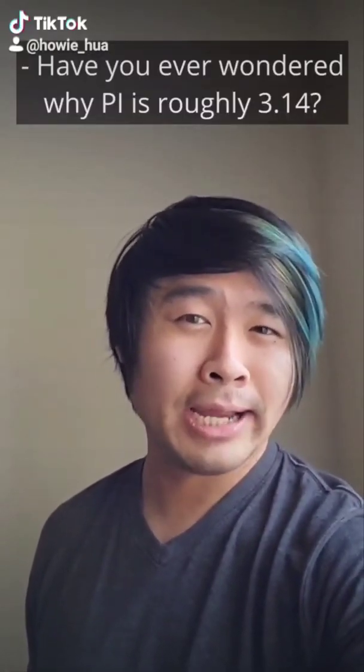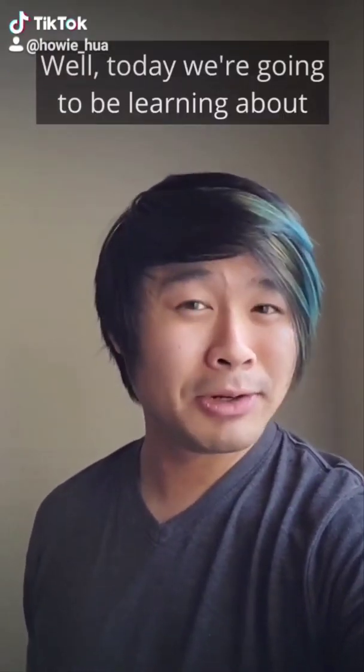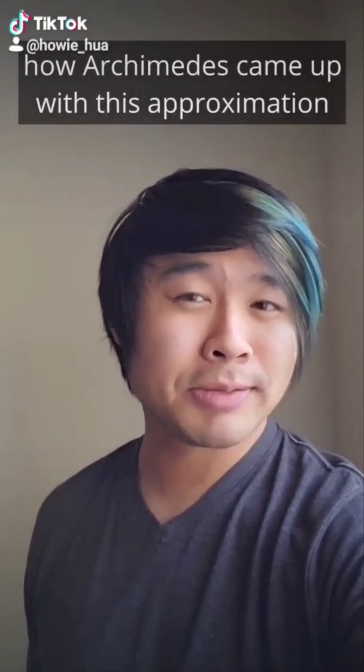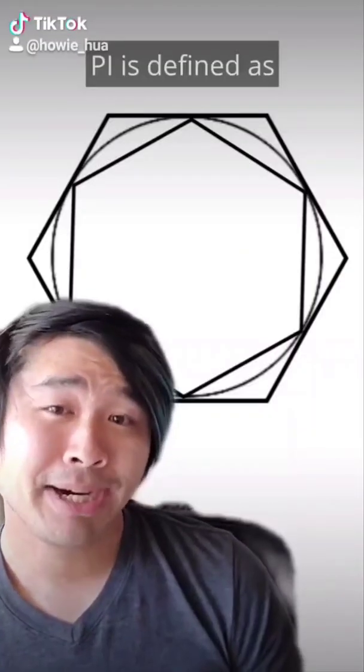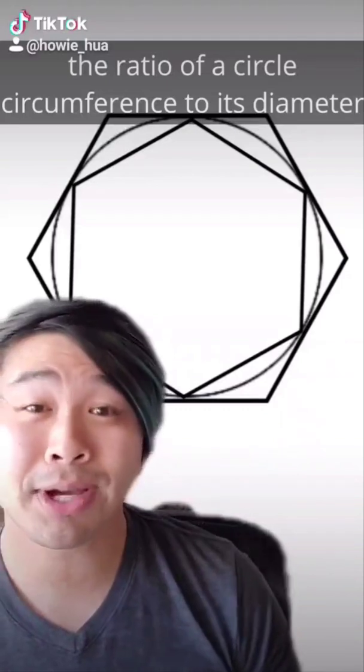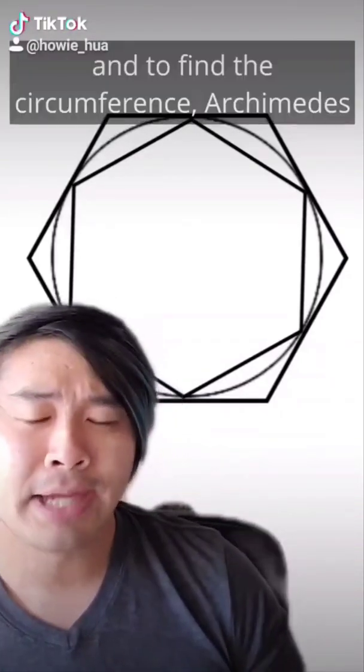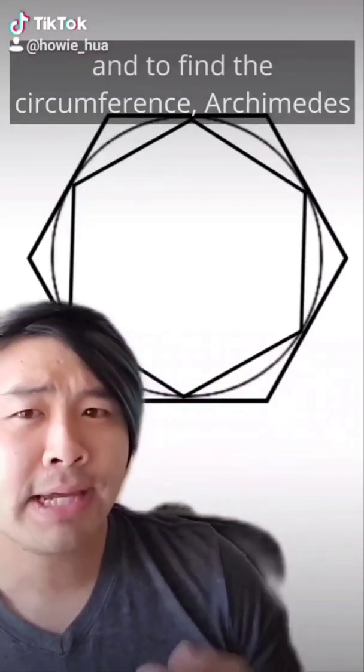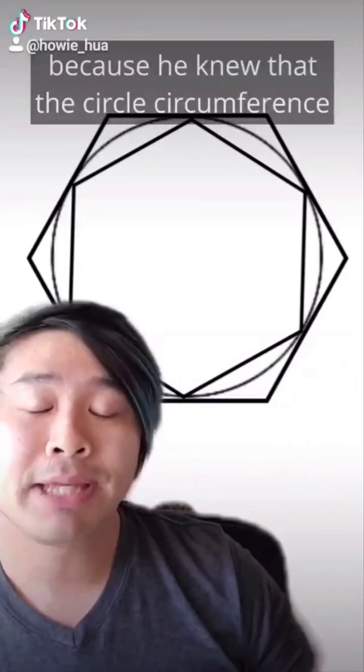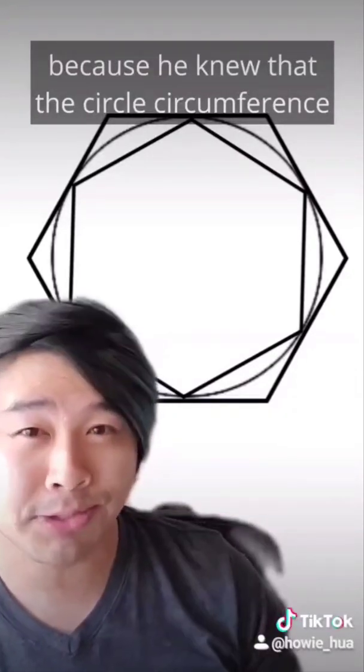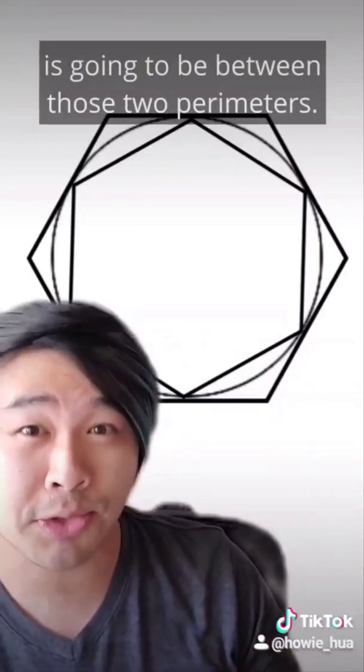Have you ever wondered why pi is roughly 3.14? Well, today we're going to be learning about how Archimedes came up with this approximation over 2200 years ago. Pi is defined as the ratio of a circle's circumference to its diameter. And to find the circumference, Archimedes inscribed and circumscribed polygons on this circle because he knew that the circle's circumference is going to be between those two perimeters.